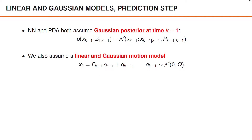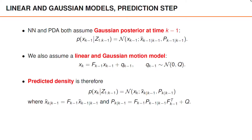For simplicity, we here assume that the motion model is linear and Gaussian. It therefore follows that the predicted density is also linear and Gaussian, and we have closed-form expressions for the first two moments of the predicted density.